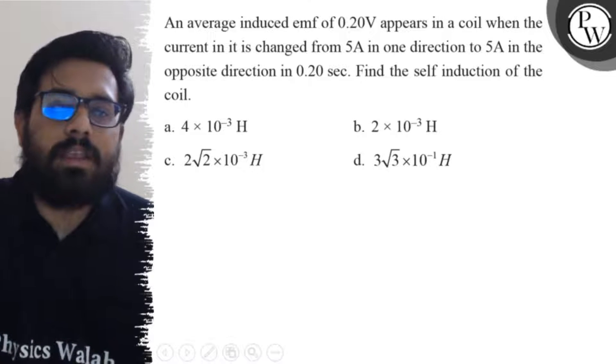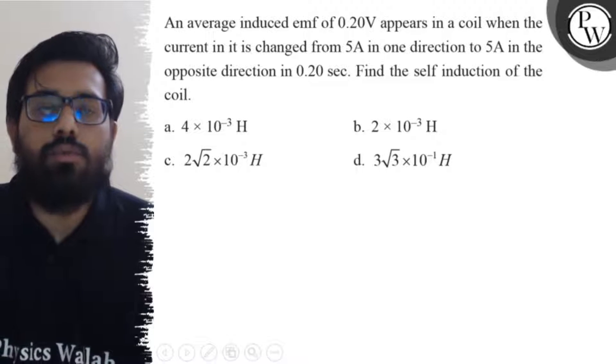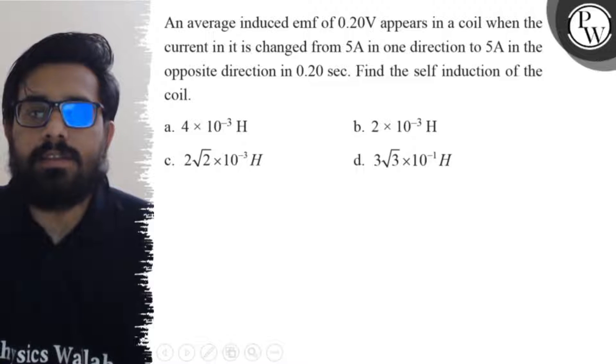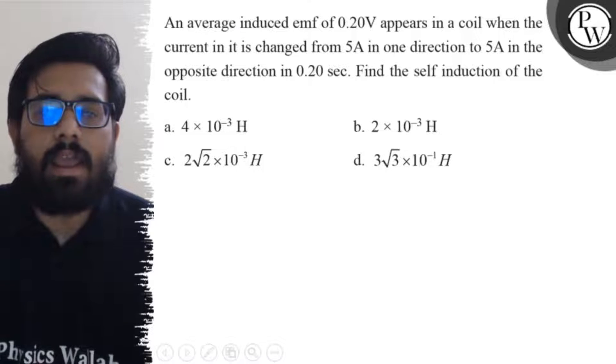The first option is 4 into 10 to the power minus 3 henry. Your second option is 2 into 10 to the power minus 3 henry. Third option is 2 root 2 into 10 to the power minus 3 henry. And your fourth option is 3 under root 3 into 10 to the power minus 1 henry.